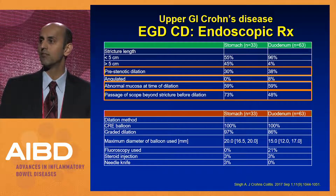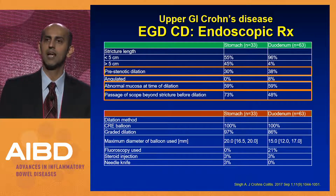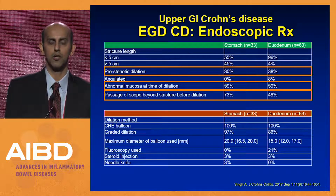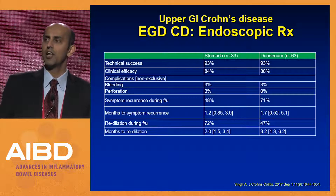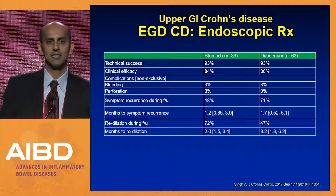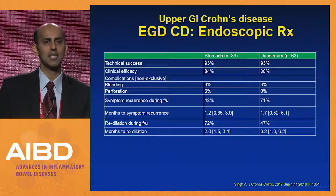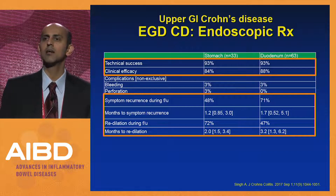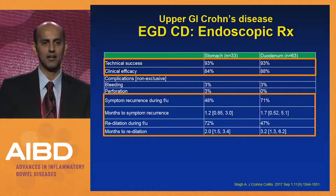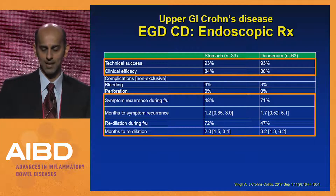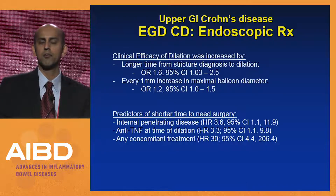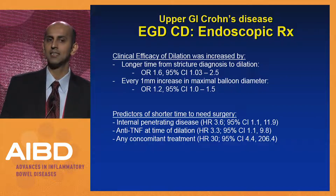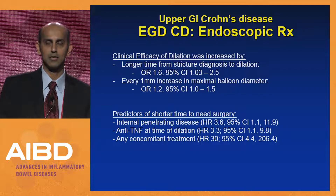However, over 50% will have symptom recurrence — with median time to recurrence of one to two months after a single dilation. Many will require redilation. A longer time from stricture diagnosis to dilation, and the wider you can dilate, the better the clinical efficacy. On the other hand, if they have penetrating disease, they are likely to require surgery despite endoscopic dilation.